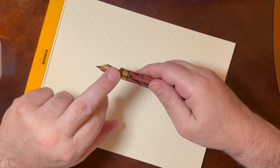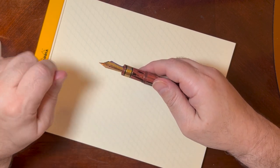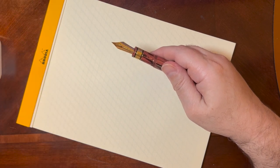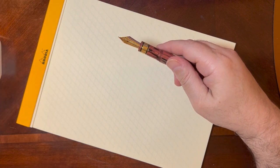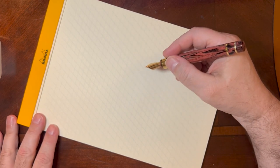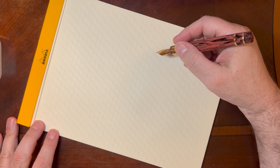With an EF nib, an EF point. Now this is a European style EF which means it's not quite as thin or narrow a line as you get with a Sailor or a Platinum extra fine nib.